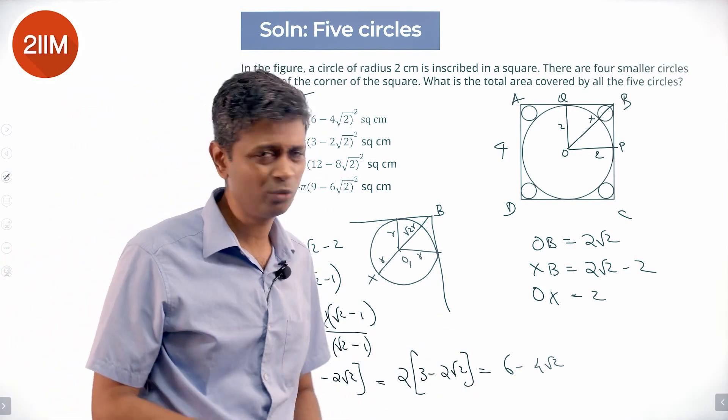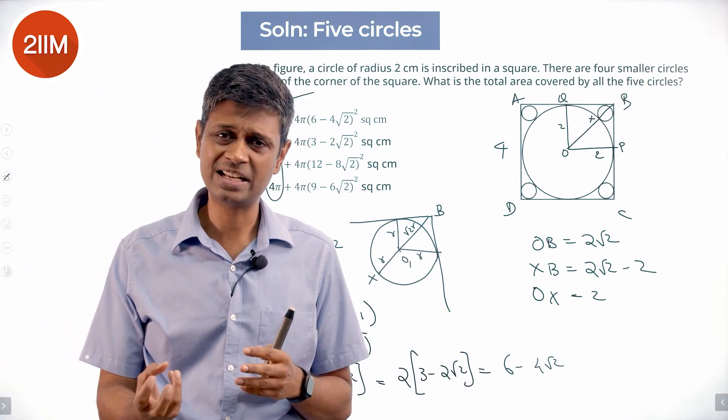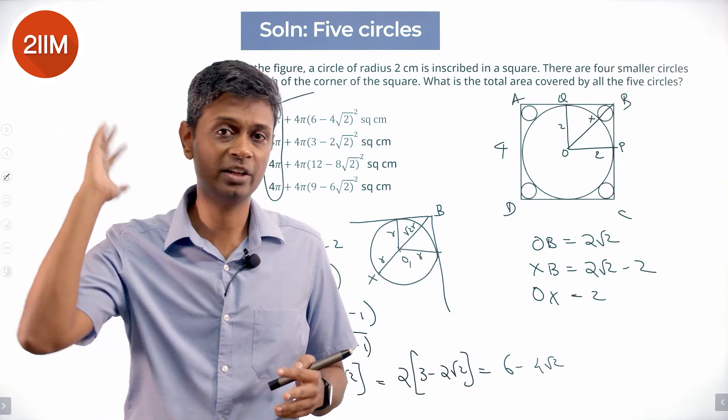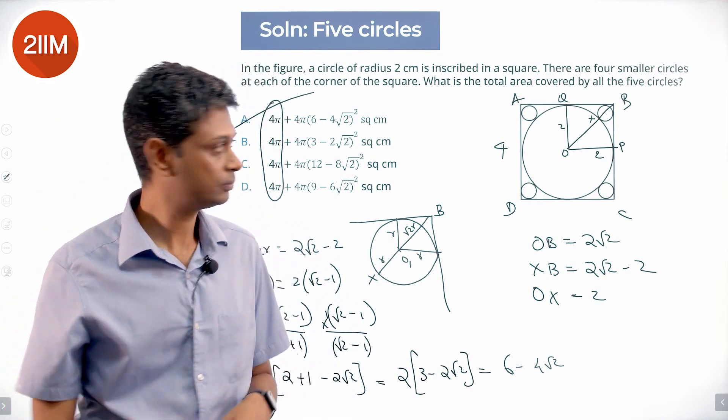For all of these questions, the idea is to find one radius in terms of another side or radius. Once we find that, the rest follows.